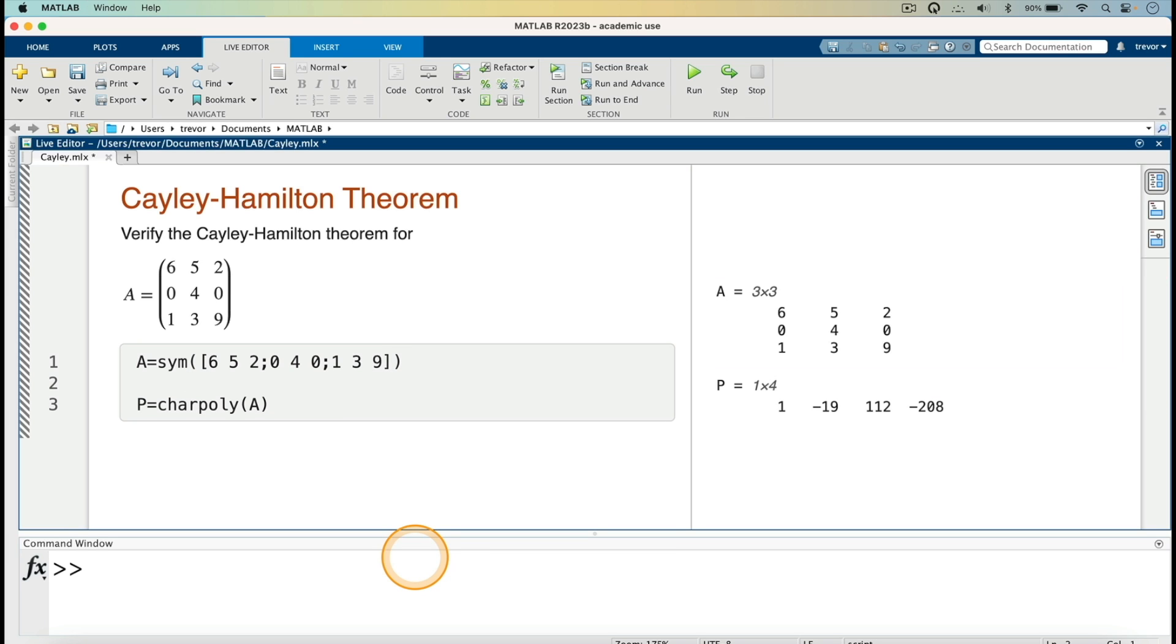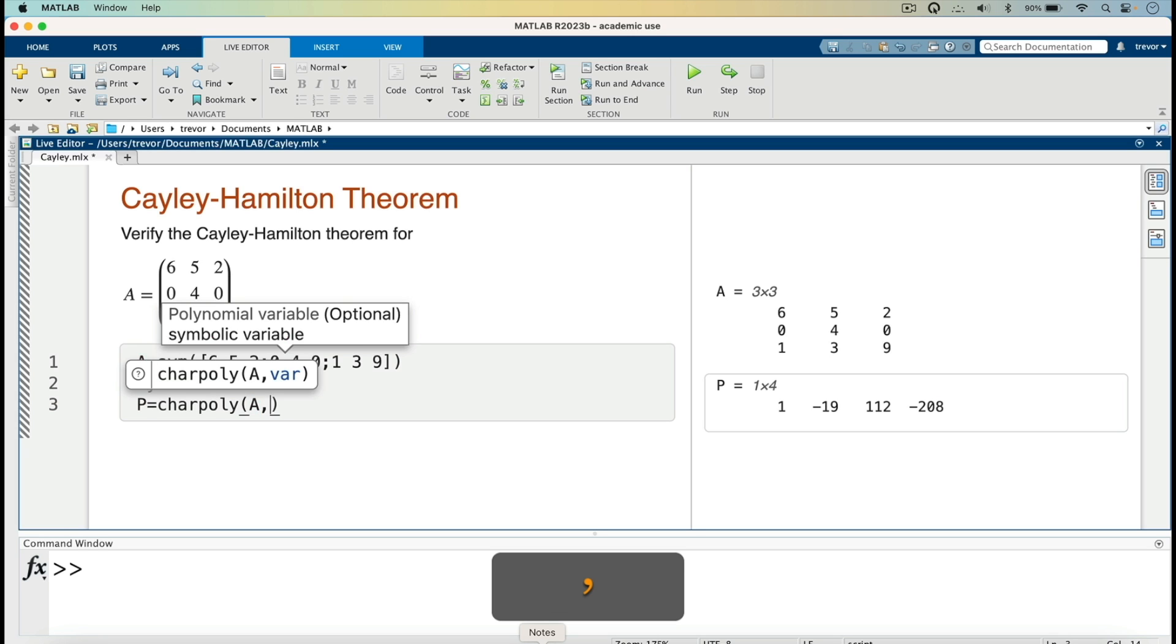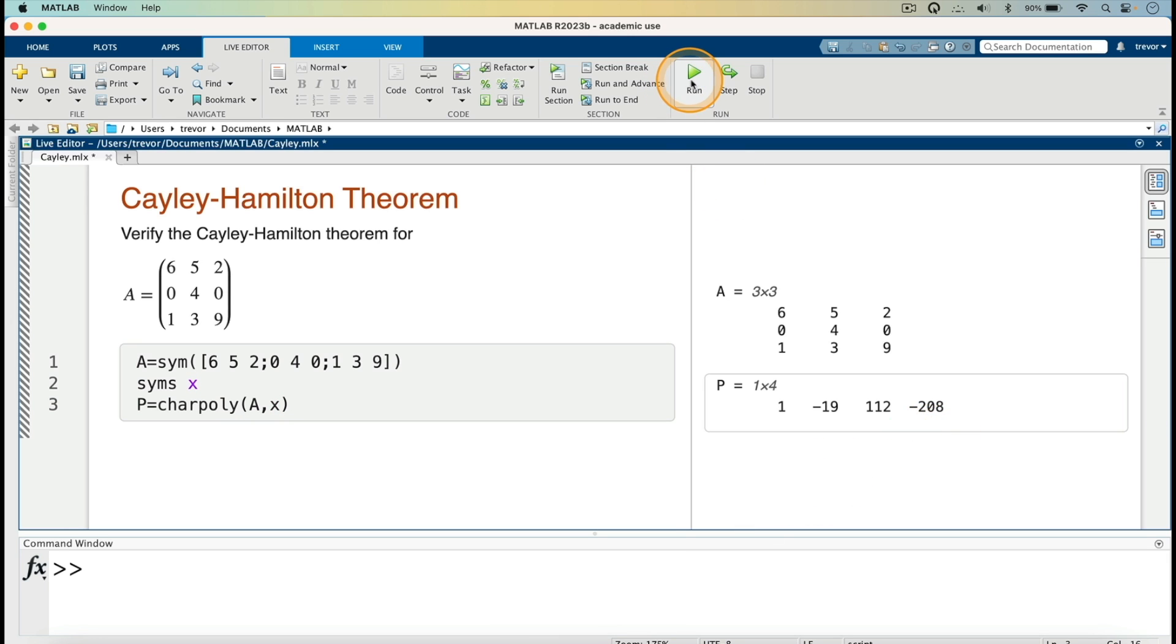The next step is now to create a symbolic variable, so syms x. I will create a symbolic variable x, and then here we would say that our characteristic polynomial will be in terms of the variable x, and then I can run here.